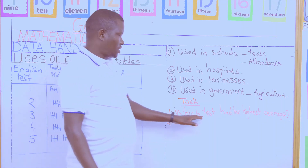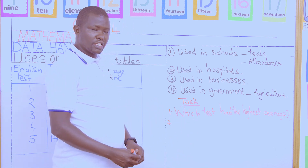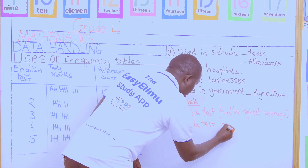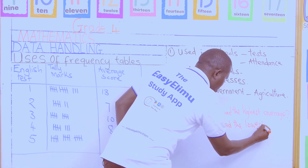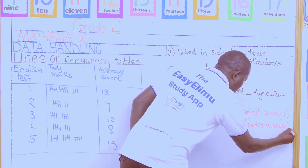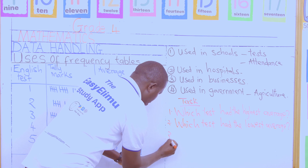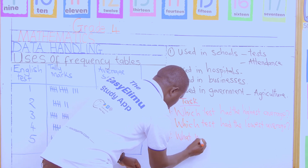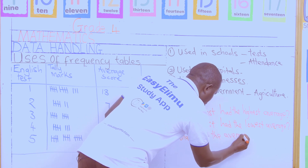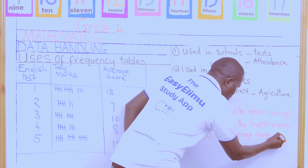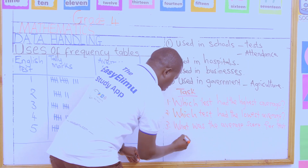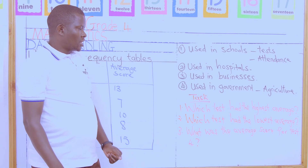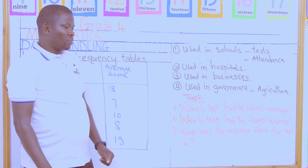Question number one: which test had the highest average? Question number two: which test had the lowest average? And the last task for today: what was the average score for test 4? Those are the details for today — which test had the highest average, which test had the lowest average, and what was the average score for test 4.